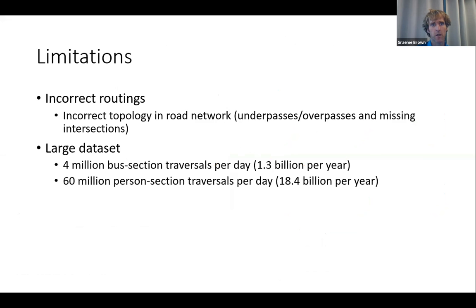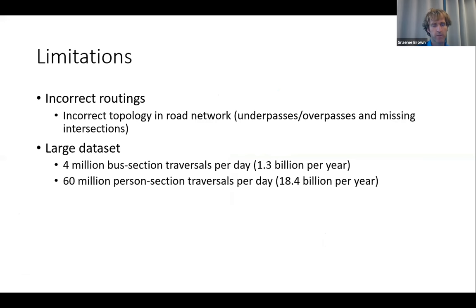We gained geographic data for visualization and mapping purposes, and we are able to sum data for shared road sections. Limitations include incorrect route routing — sometimes road data doesn't have correct topology for overpasses and underpasses, which generates some errors — and a pretty massive dataset, particularly for person-section traversals, requiring new strategies for data management.